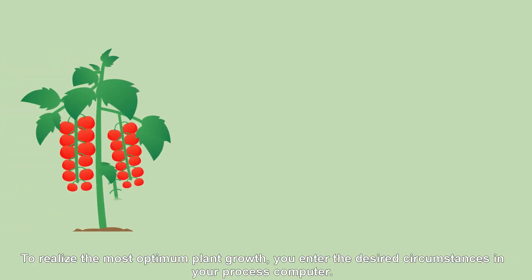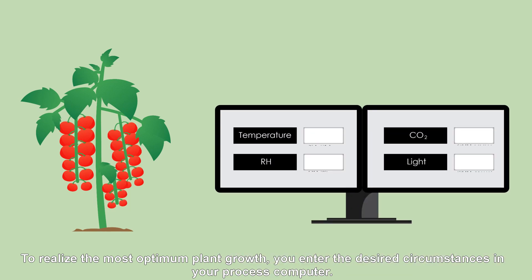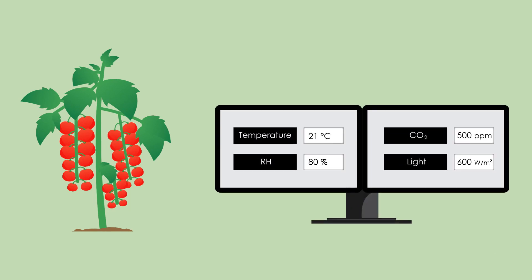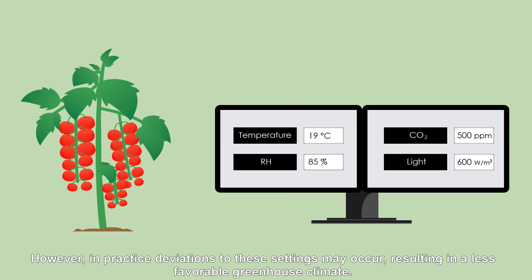To realize the most optimum plant growth, you enter the desired circumstances in your process computer. However, in practice, deviations to these settings may occur, resulting in a less favorable greenhouse climate.